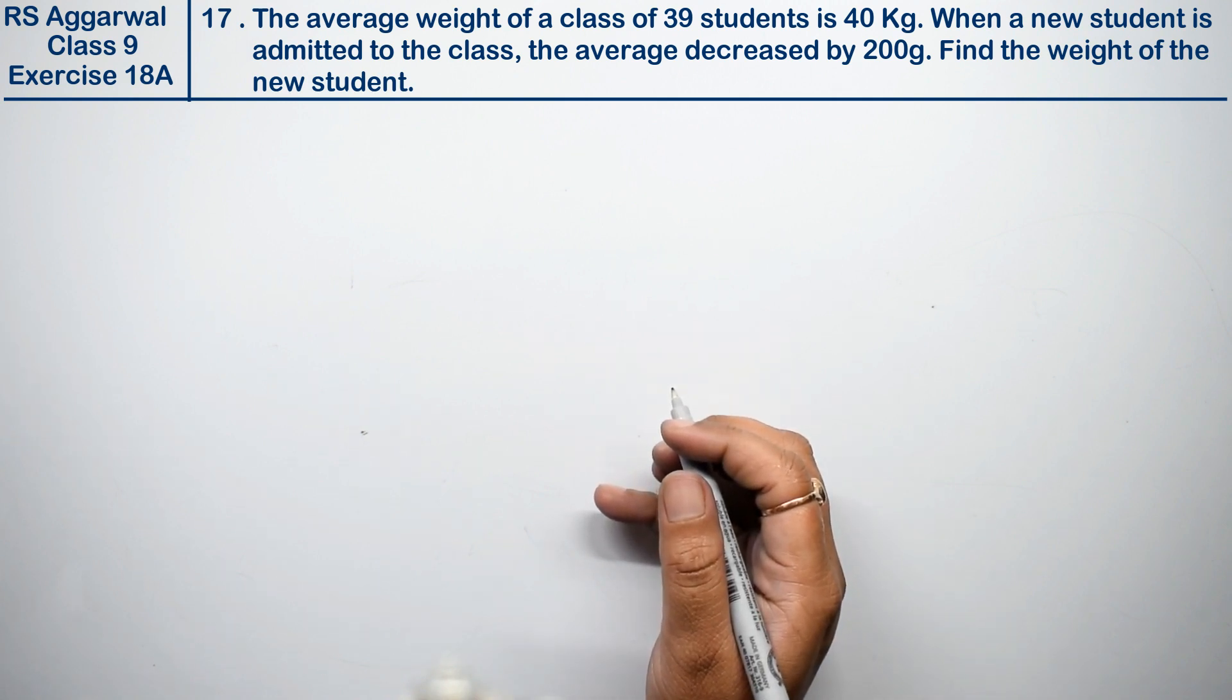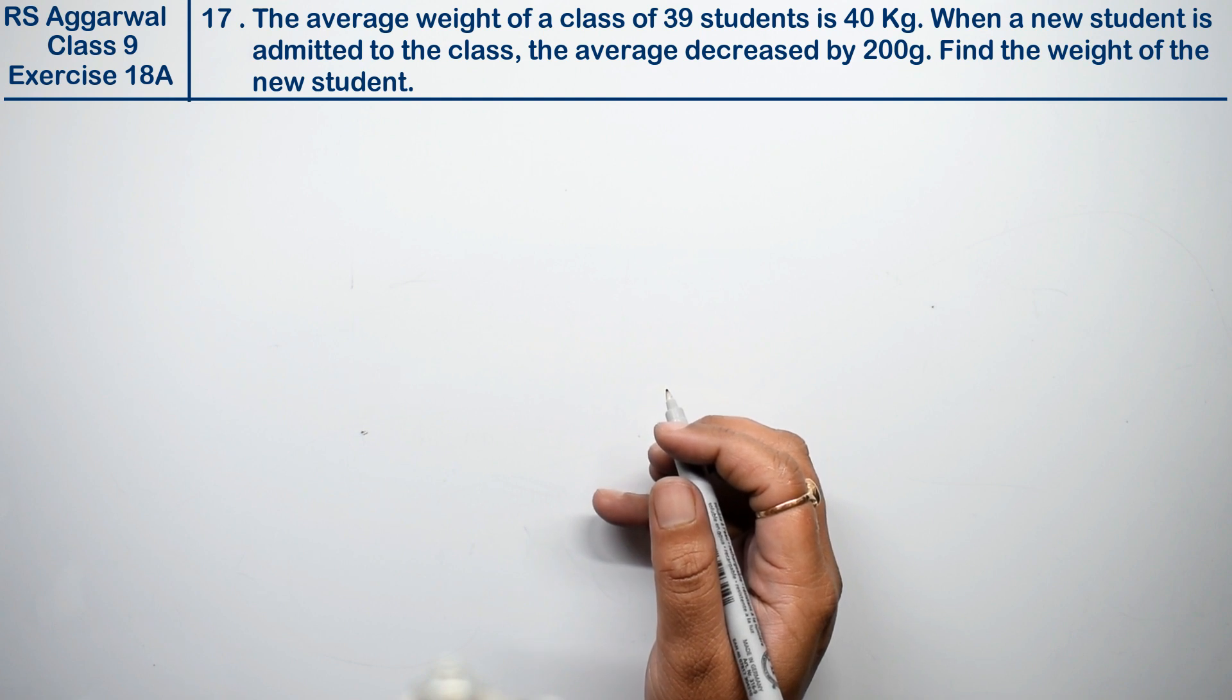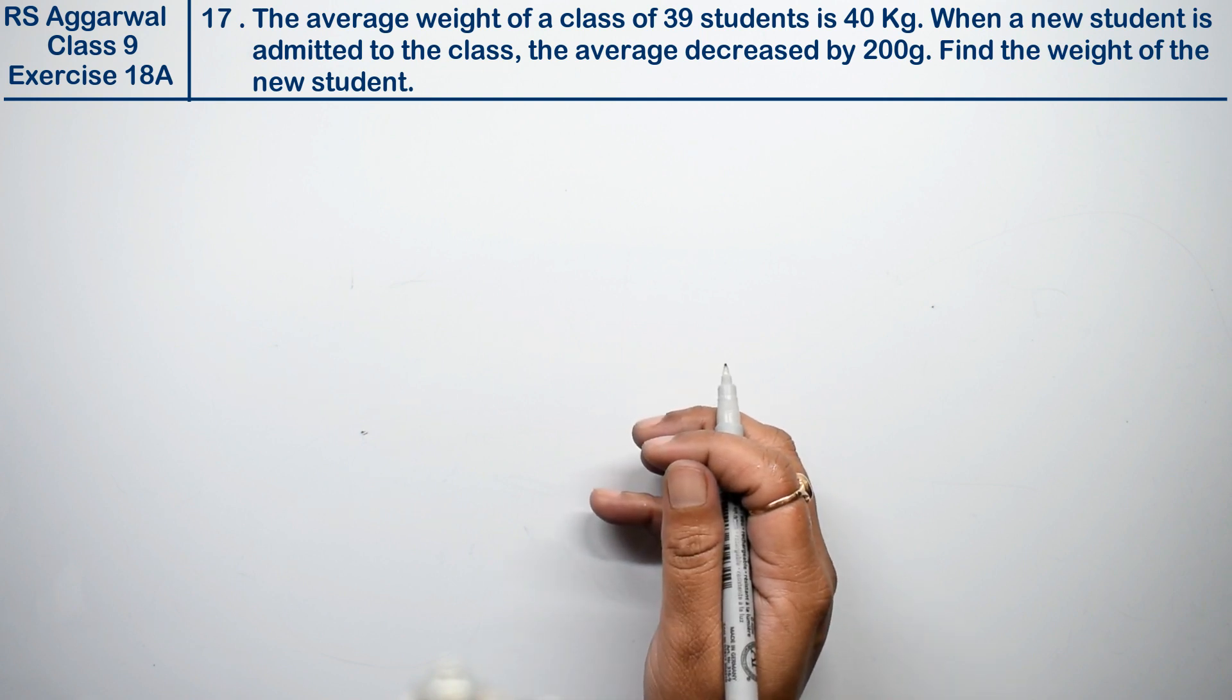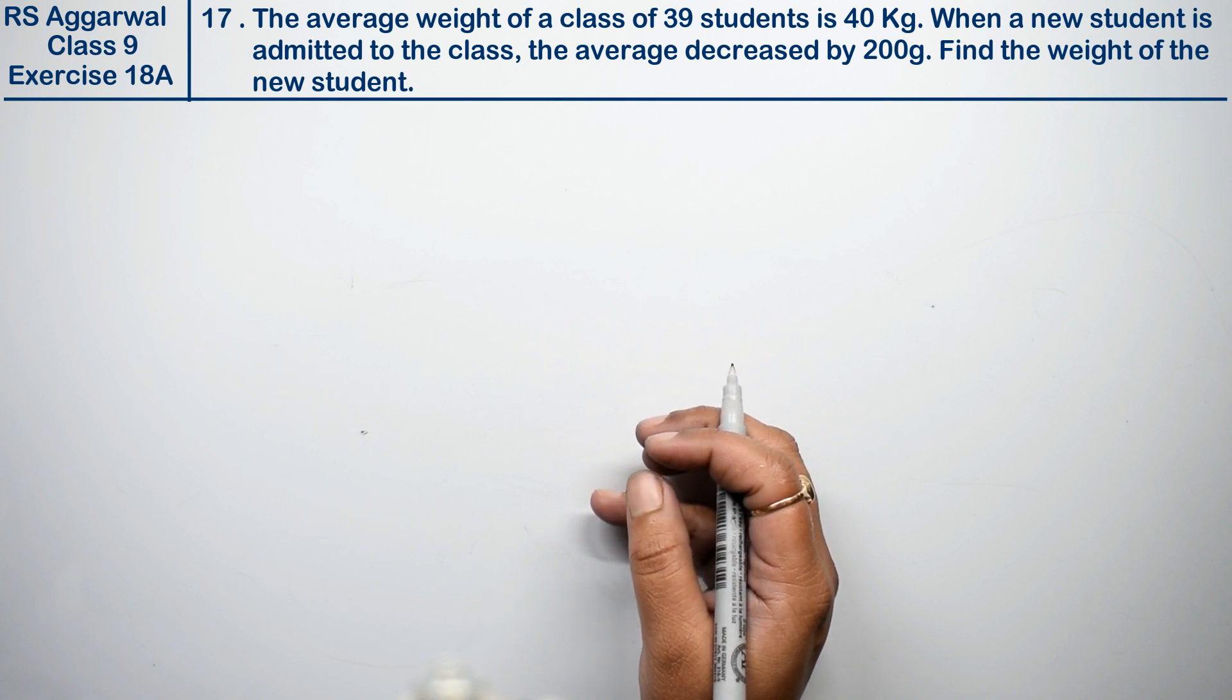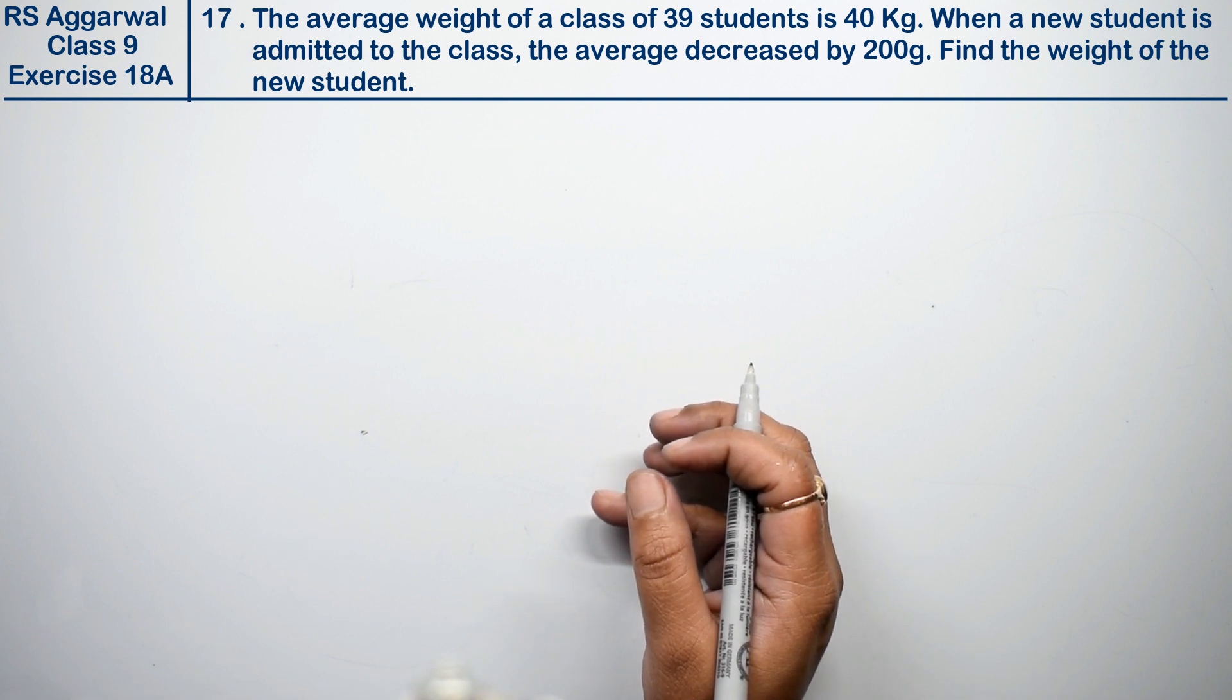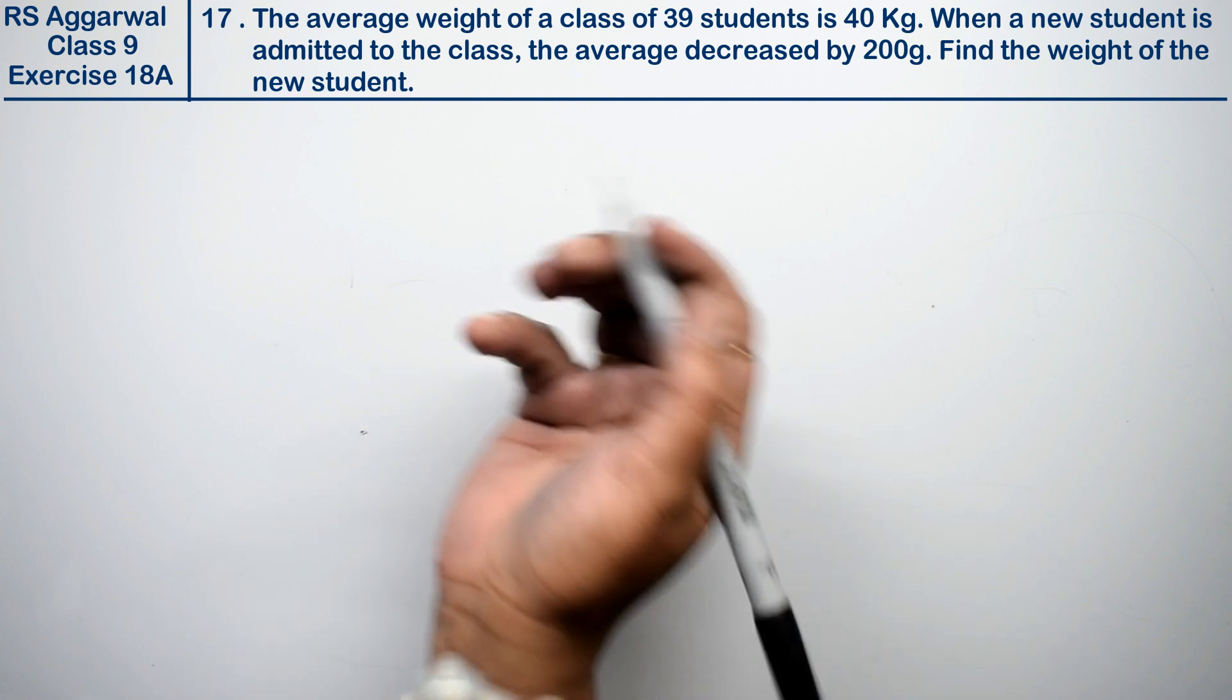Question number 17 is: the average weight of a class of 39 students is 40 kg. When a new student is admitted to the class, the average decreased by 200 grams. So we have to find the new student's weight. So how do we get out of it?